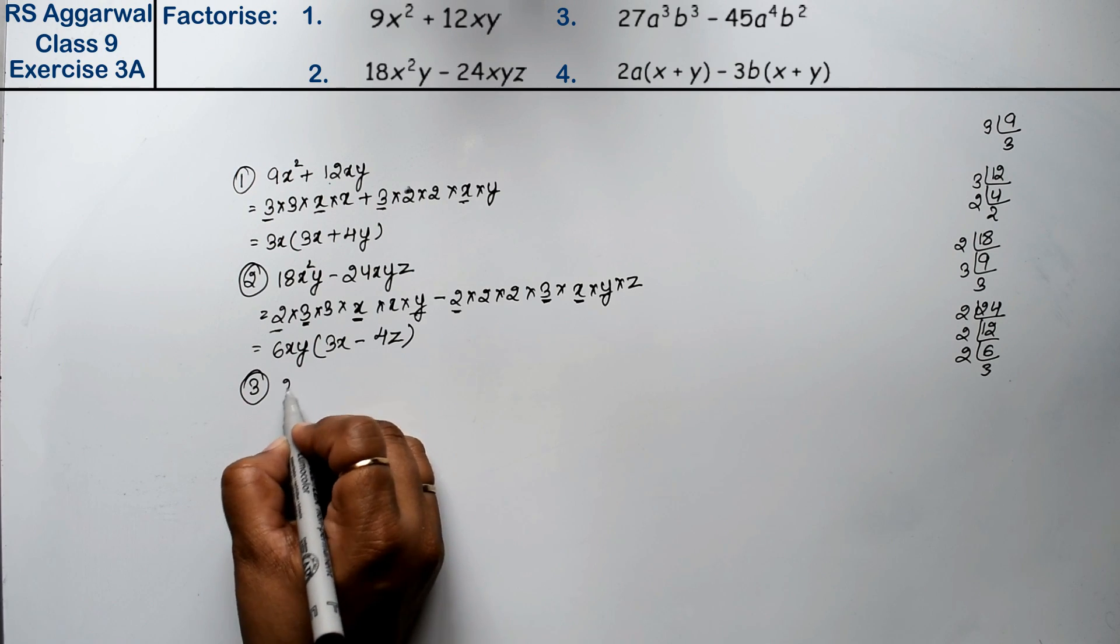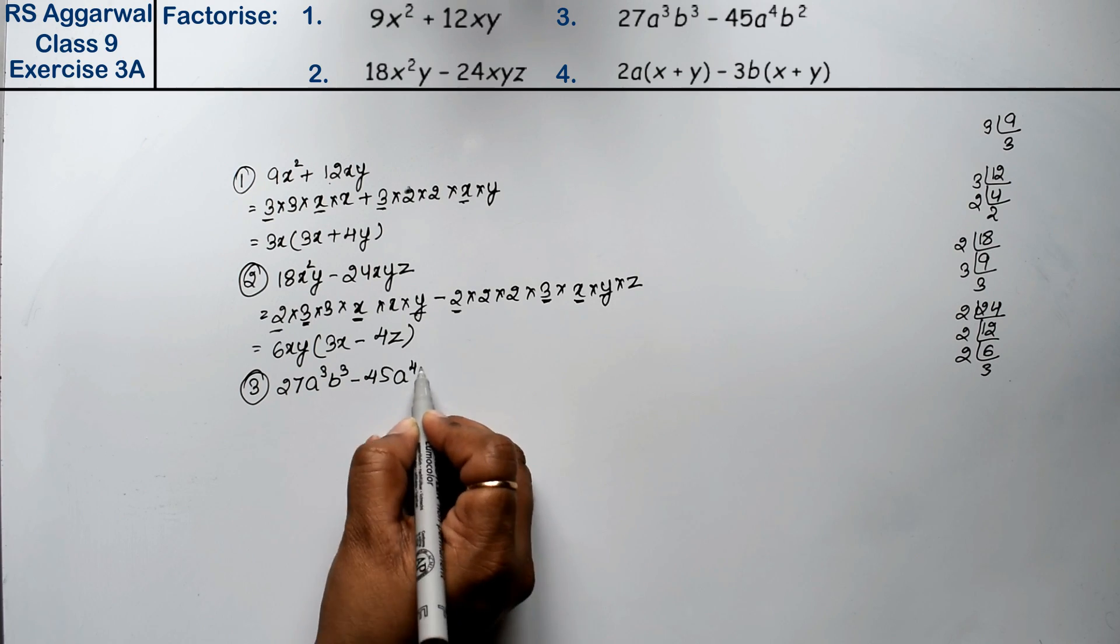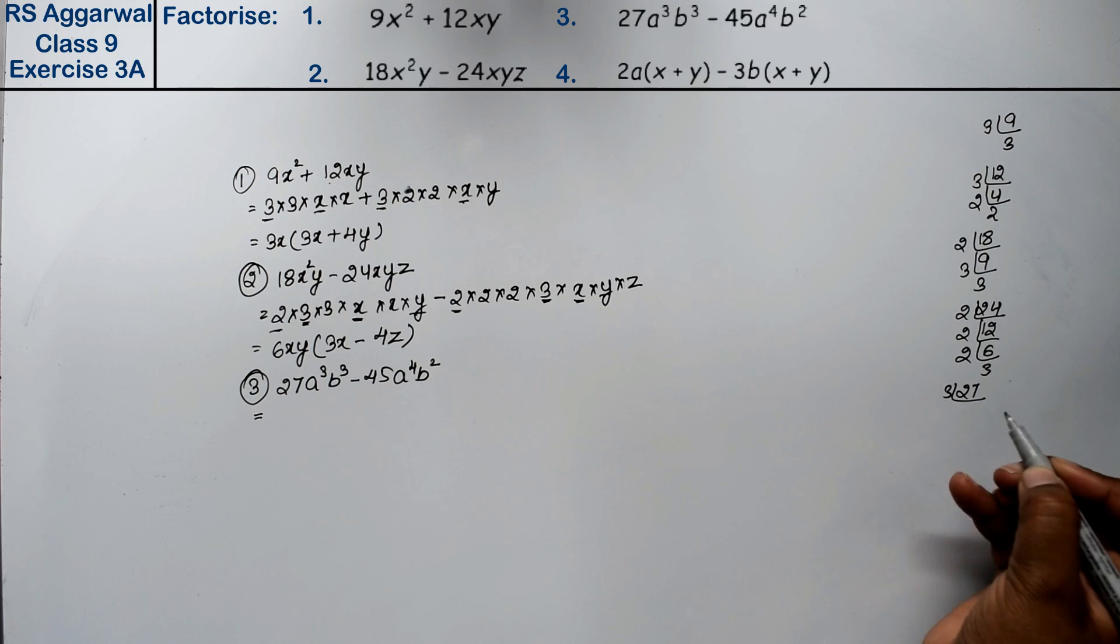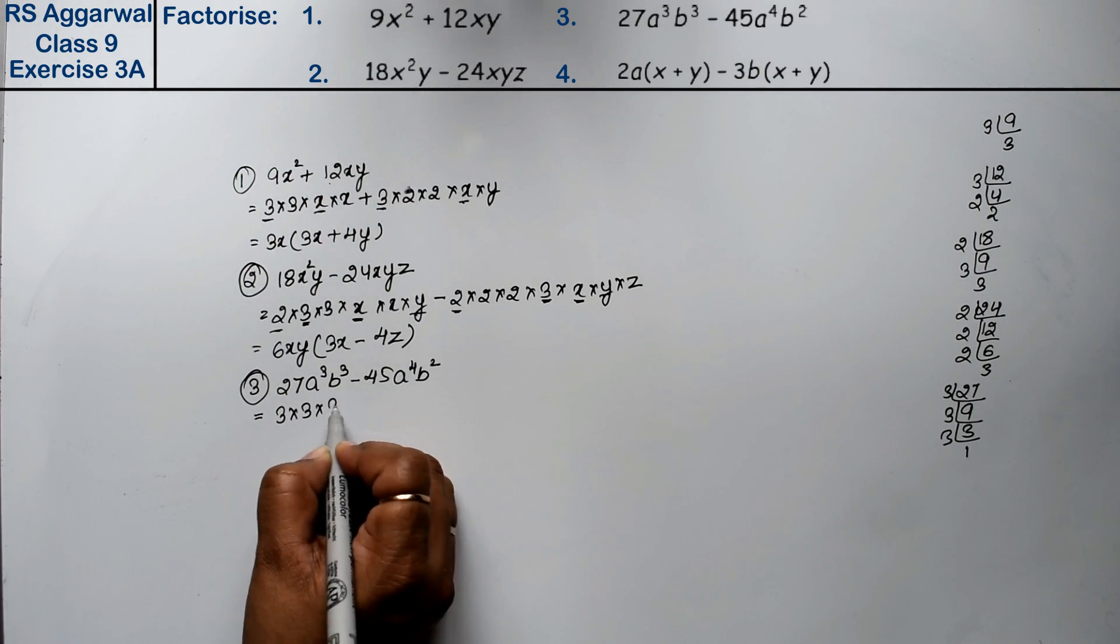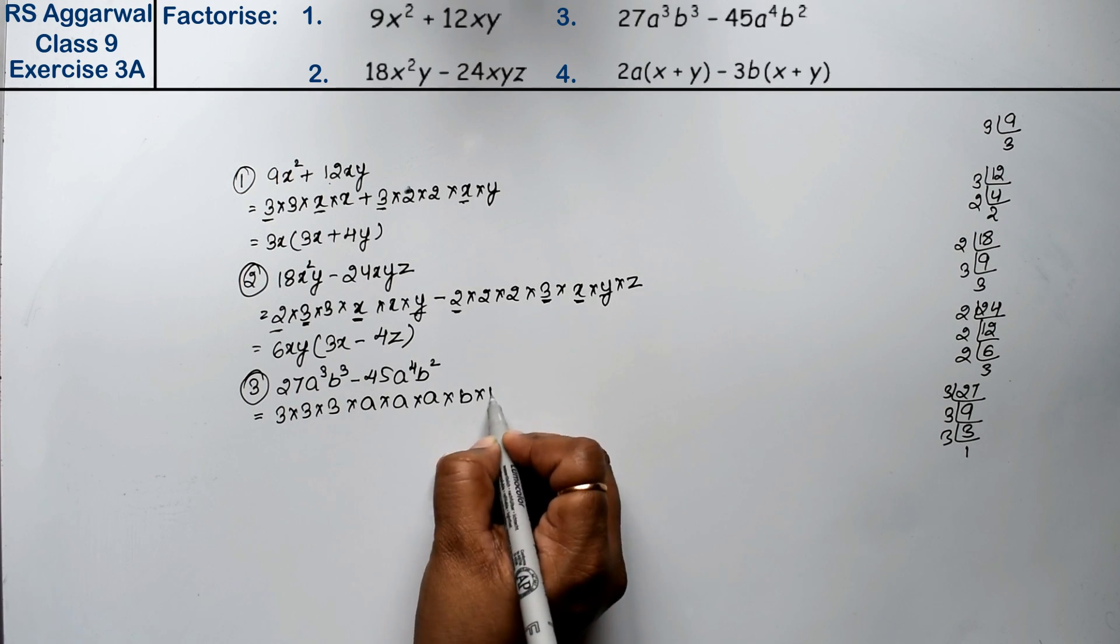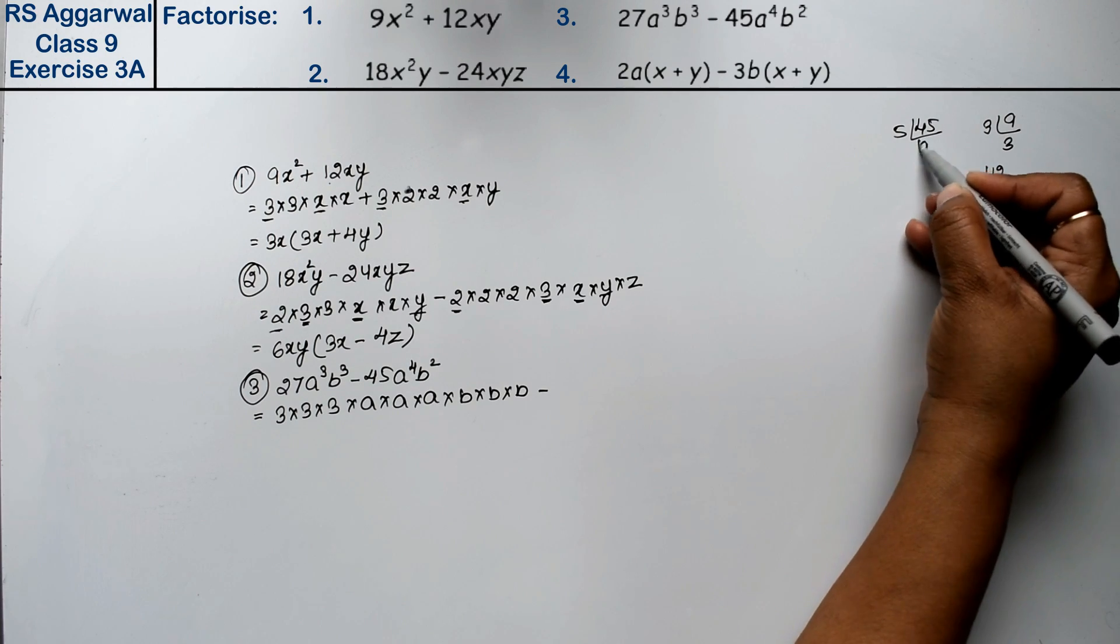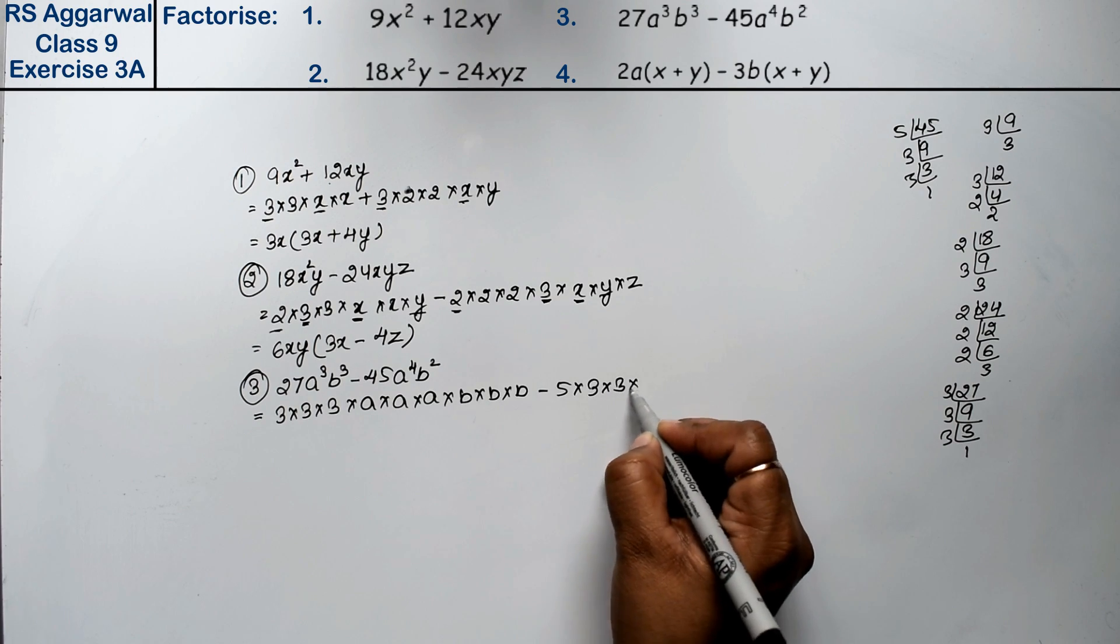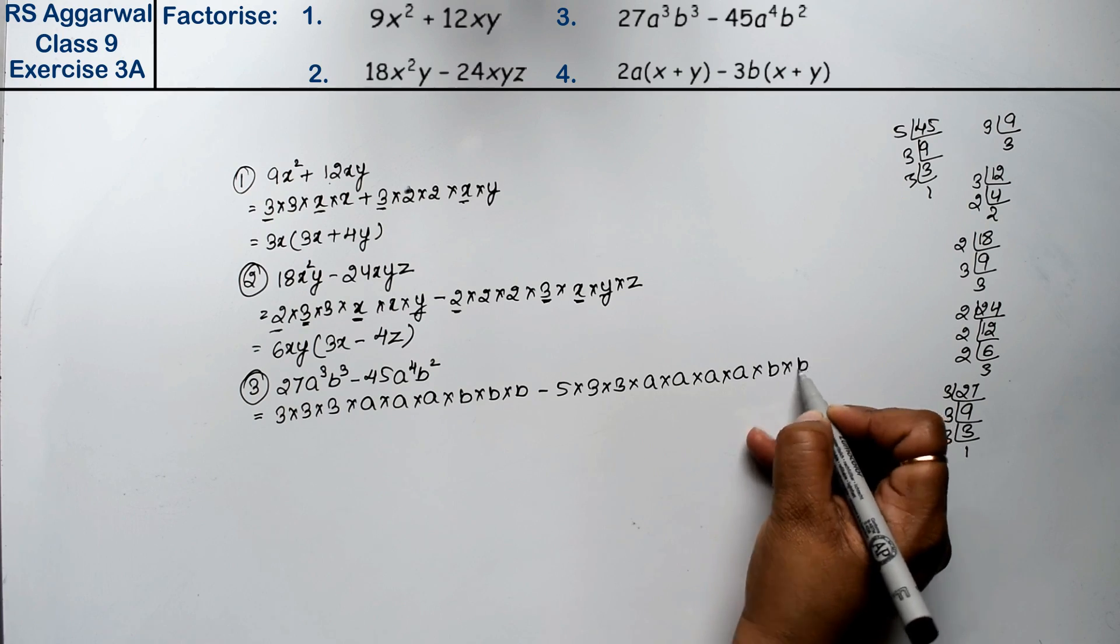Let's do third question. Third question is 27a³b³ - 45a⁴b². So now, how do we write 27? 27 is 3 × 3 × 3. So 3 × 3 × 3 × a³ can be written as a × a × a, and b³ as b × b × b minus. 45 is 9 × 5, which is 3 × 3, and 5. So 5 × 3 × 3 × a⁴ is a × a × a × a, and b² is b × b.